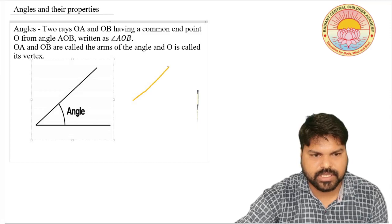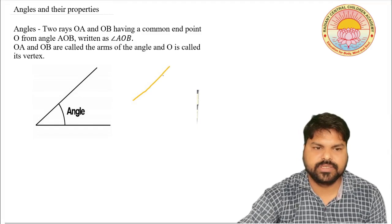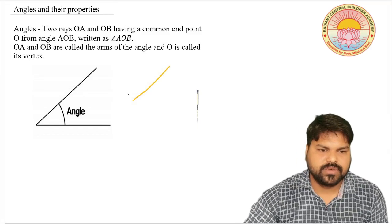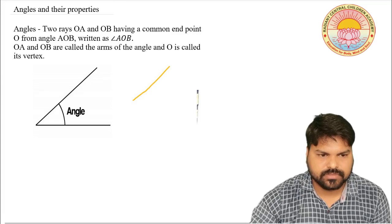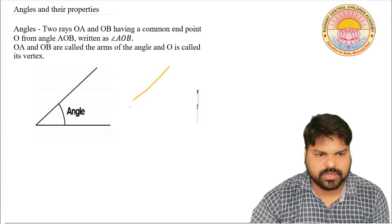We have one ray, and we have another ray — a second ray. Let us see this: one ray and another ray form an angle.